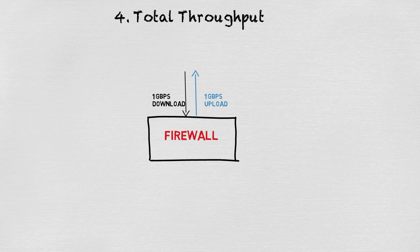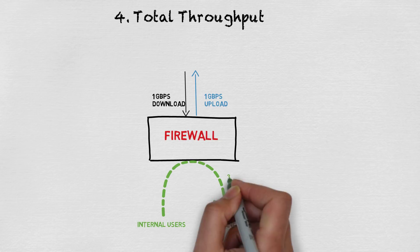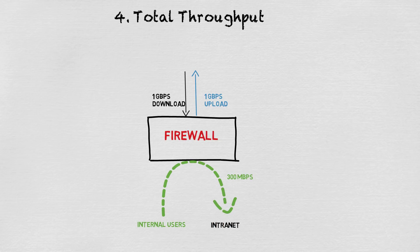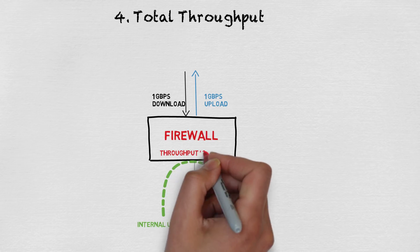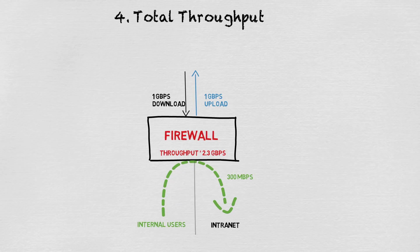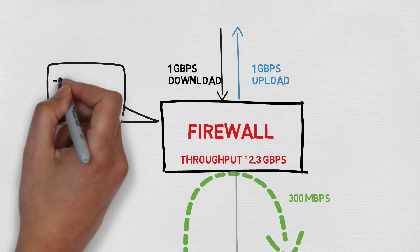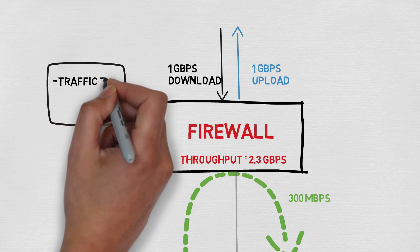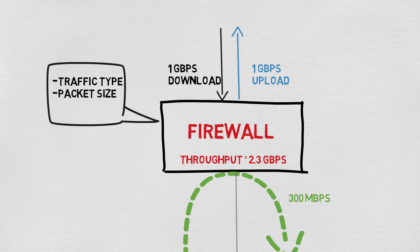Don't forget about internal-only traffic, such as Wi-Fi users hitting your DNS server or internal users hitting your intranet portal. A properly designed network should have segmentation between different networks, which means all traffic destined outside of that segment would hit the firewall policy and count towards your total throughput. Also, make sure you look at what kind of traffic type the vendor used in calculating their advertised throughput — vendors will often advertise UDP with big packet sizes instead of TCP because they perform much better.